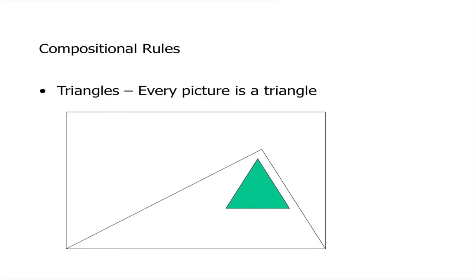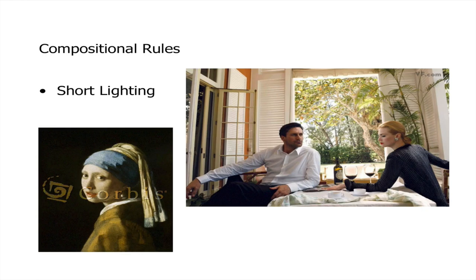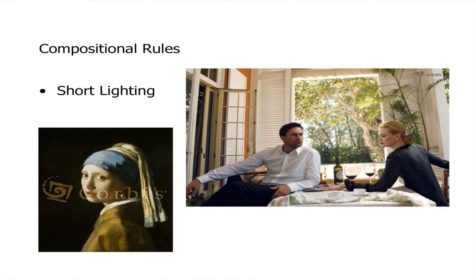Then there's triangles — every picture is also a triangle compositionally. Usually the whole subject is a triangle, and also each person within it are triangles. Finally, short lighting is that you're always shooting into the shadow side. Instead of having the sun in the face of your subject and behind you as a photographer, the sun is always behind your subject and in your face — you can't see what you're doing, but it makes a better picture. Having the light behind a subject means you're shooting into the shadow side, and that sun is rimming around the person and creating all this detail in the subject's face.